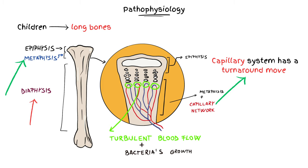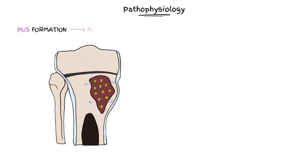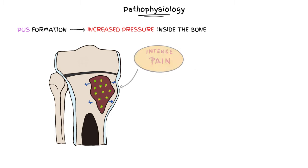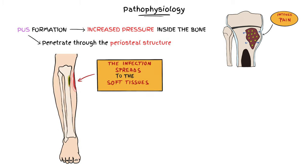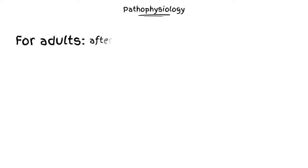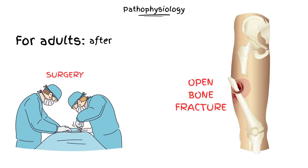The next step is the pus formation. This will increase the pressure inside the bone, and clinically it will be seen as an intense pain. Then the pus can penetrate through the periosteal structure and the infection spreads to the soft tissues. For adults, the pathophysiology is much more simple — it is caused by a surgery complication or an open fracture.